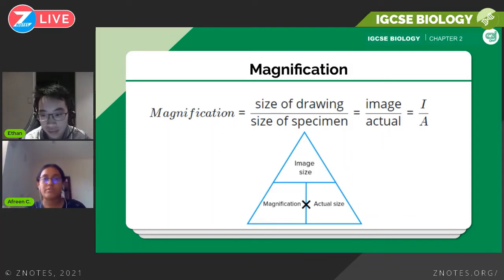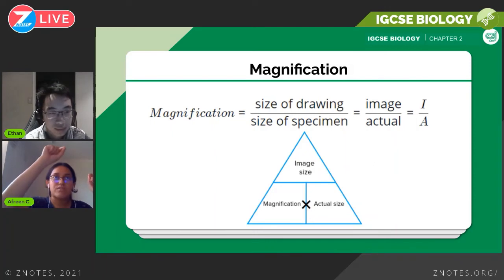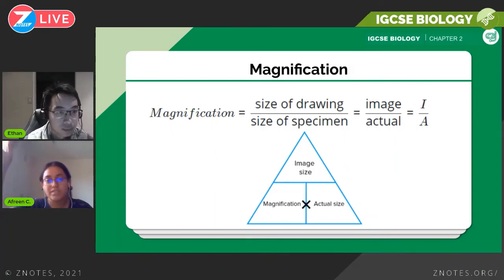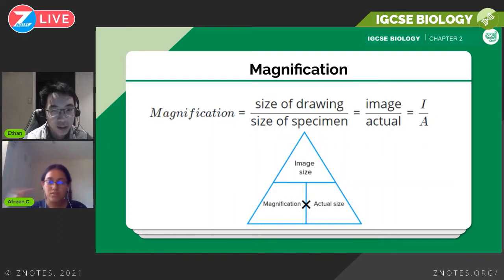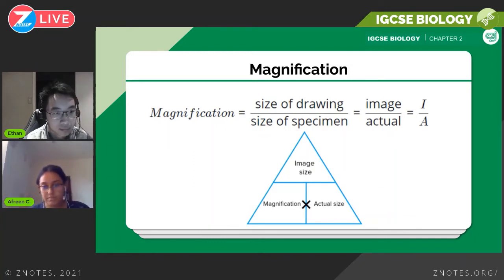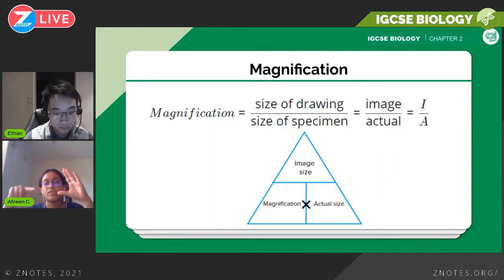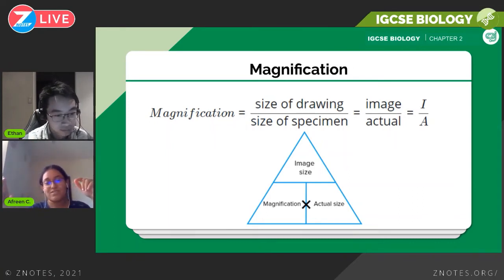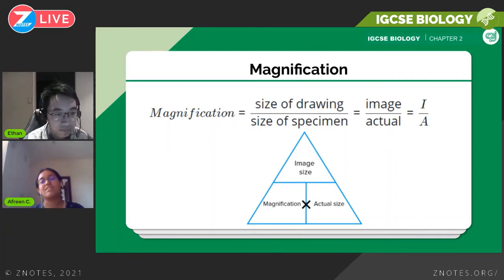Onto the formula. The next question type will typically ask you to calculate magnification. The formula is: magnification equals image size divided by actual size. You can use a formula triangle — image at the top, magnification and actual size at the bottom. A helpful mnemonic is 'I AM' — image over magnification times actual size.